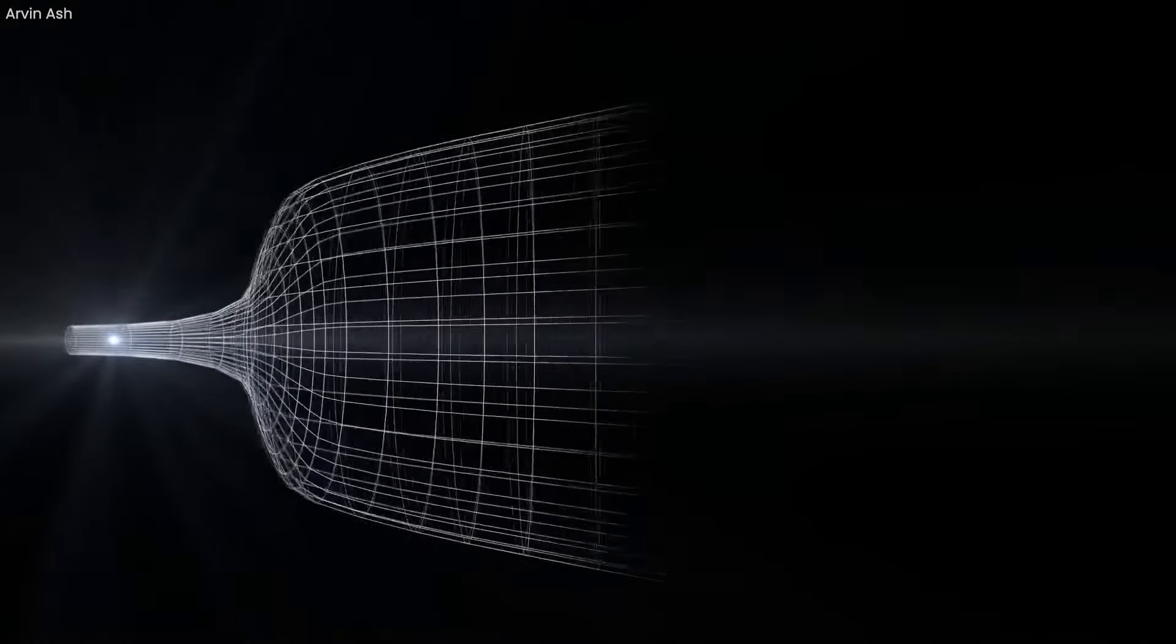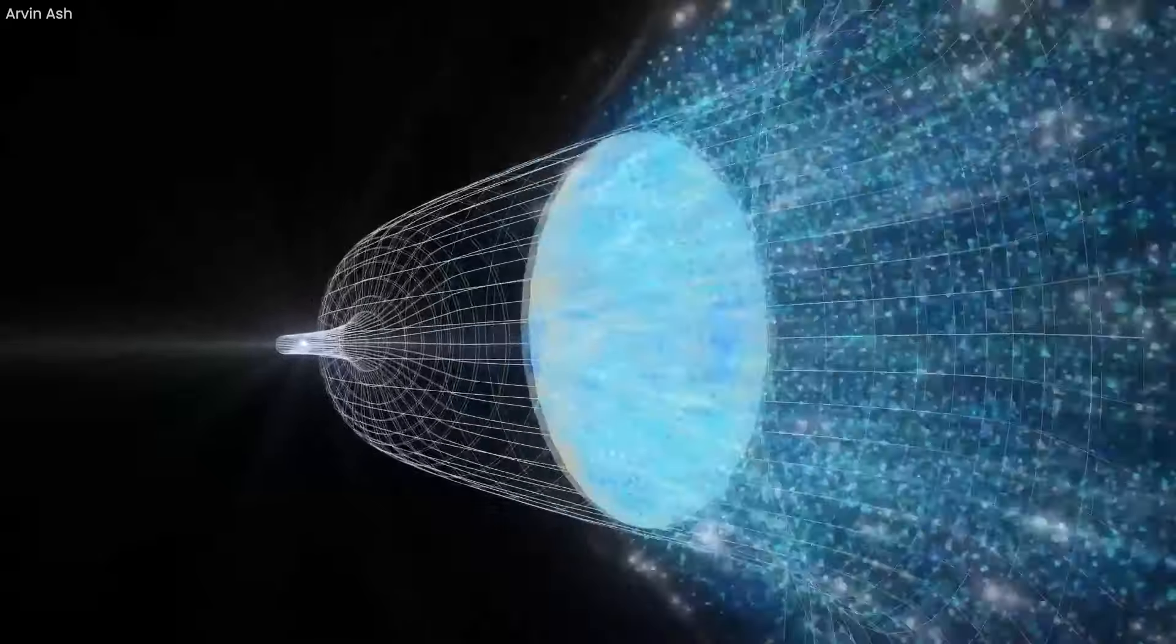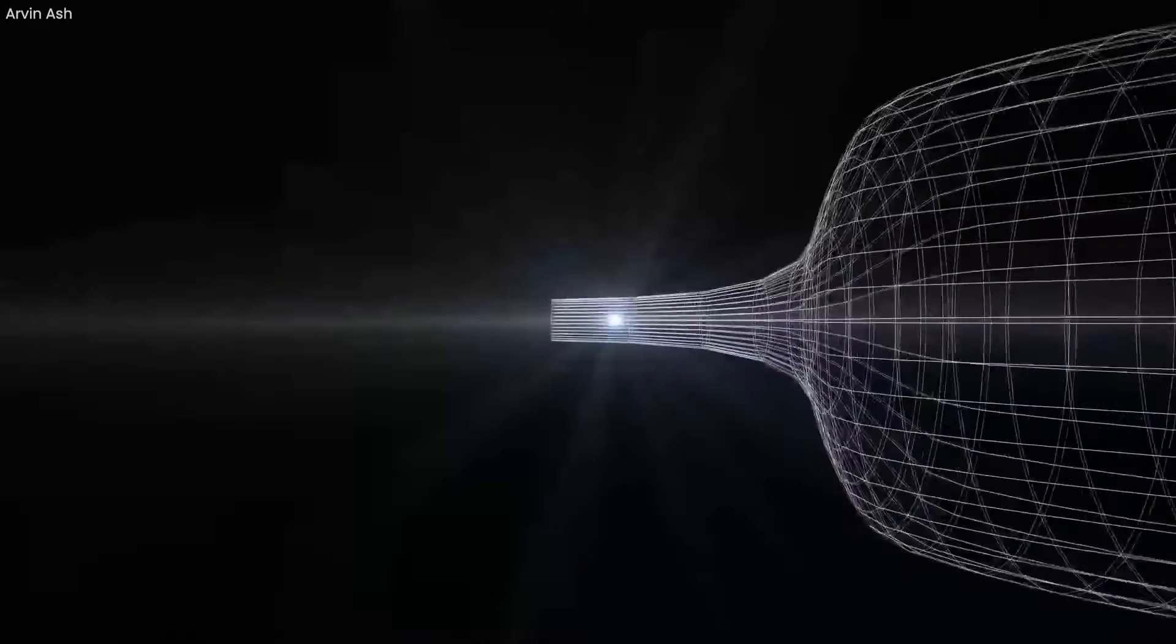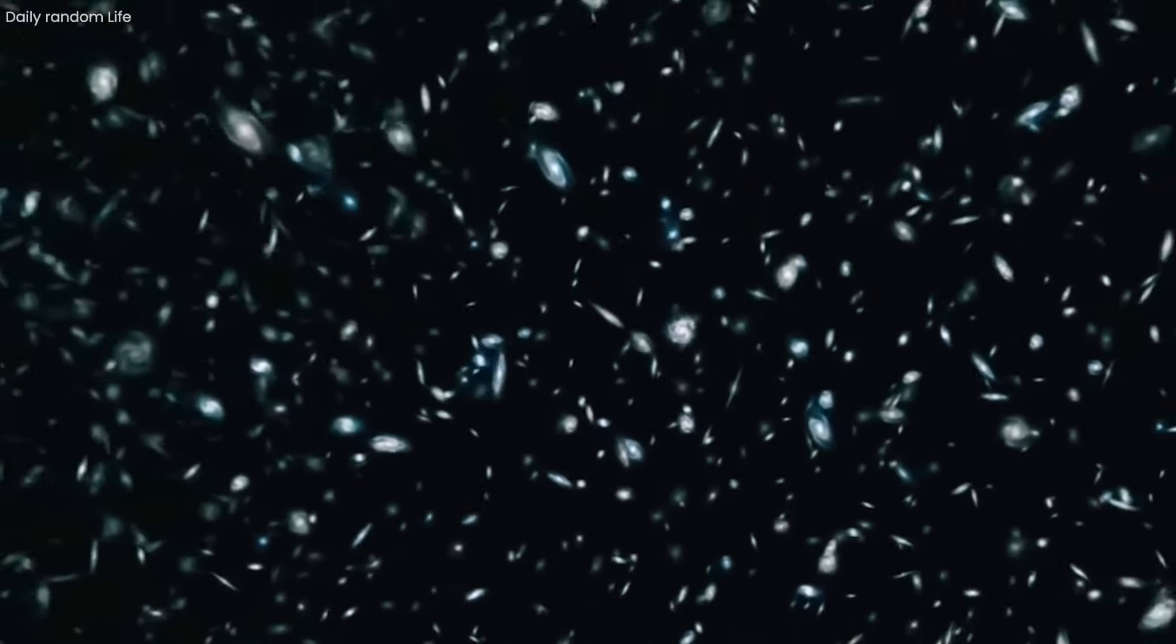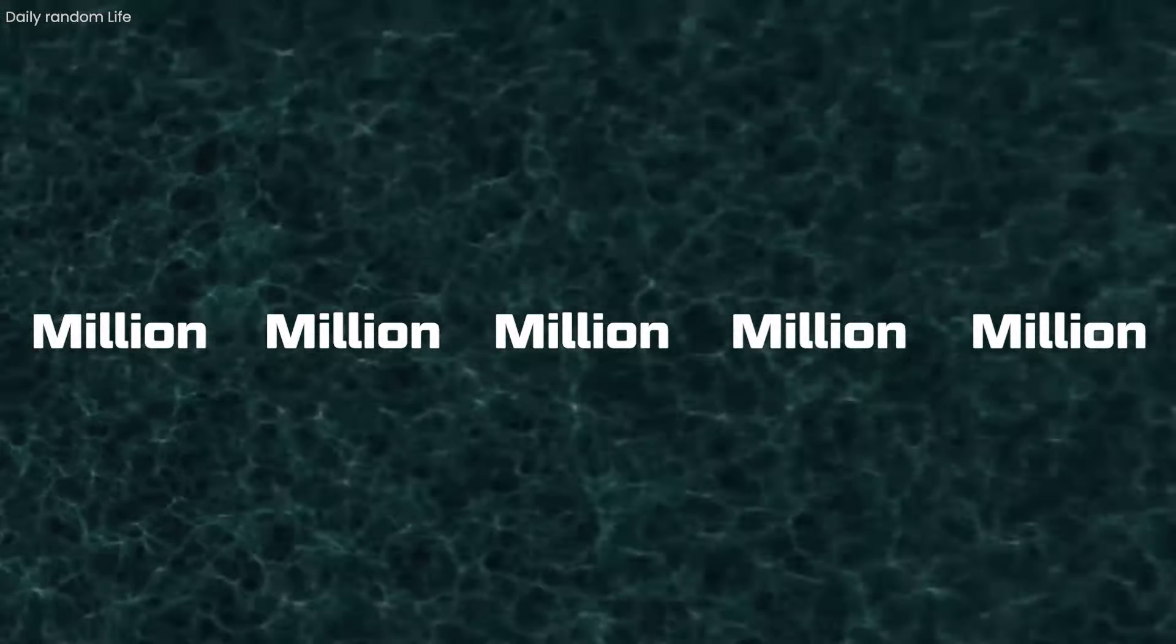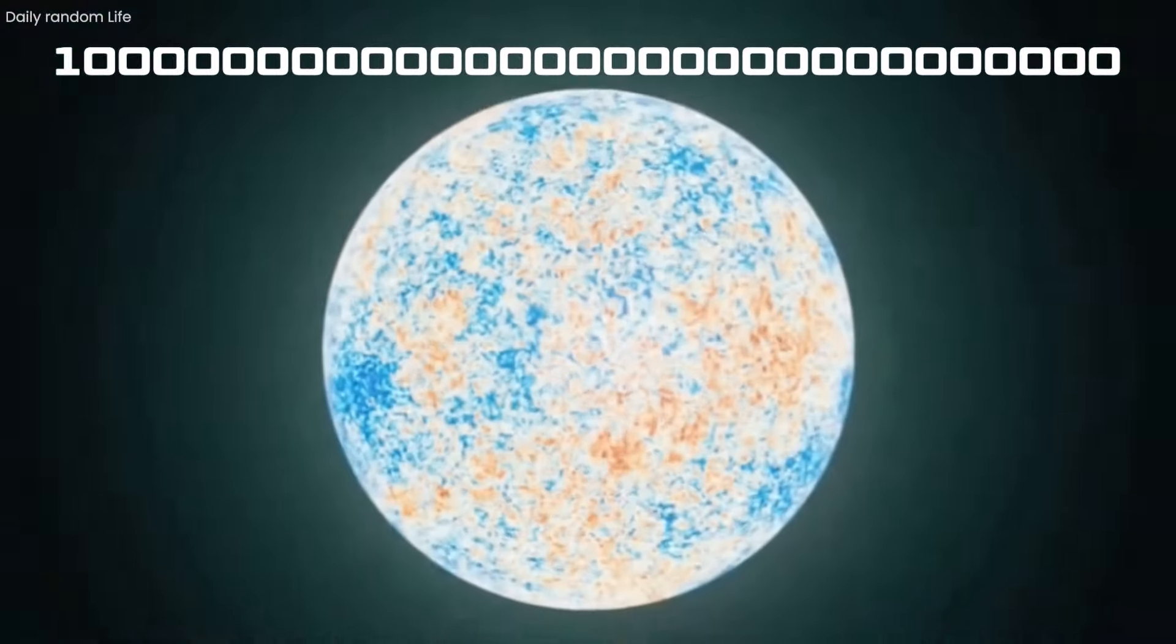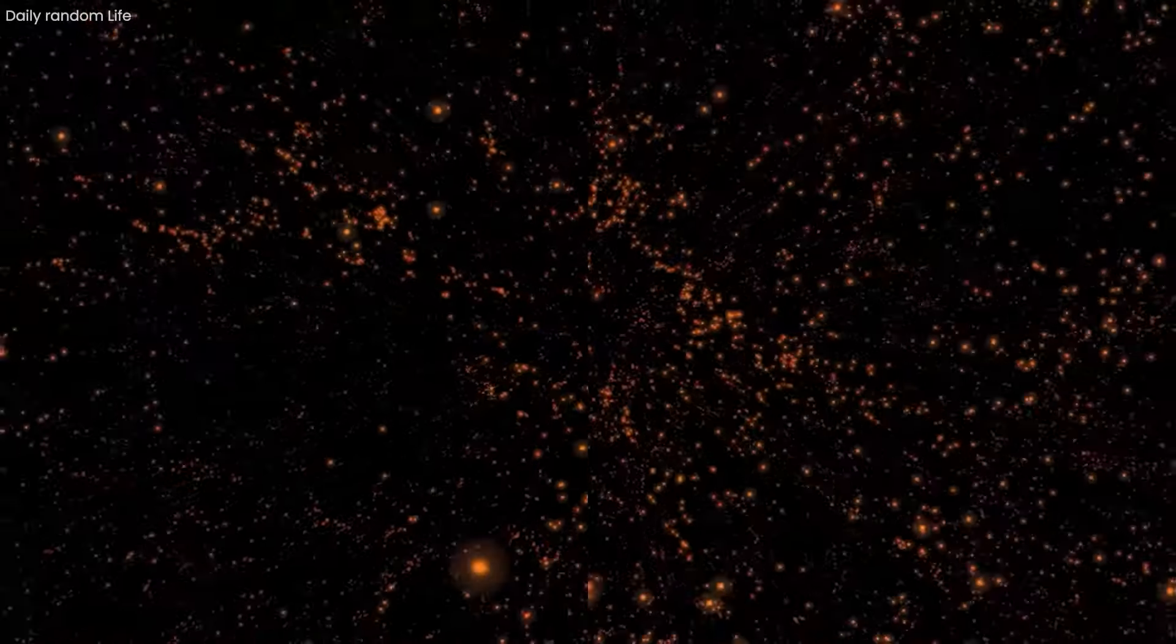The inflationary universe theory purports that the universe underwent a short and sudden episode of great expansion right after the big bang. This expansion is said to be inflationary, meaning that the universe radius increased by a million million million million million times, or one with 30 zeros after it, in only a tiny fraction of a second.